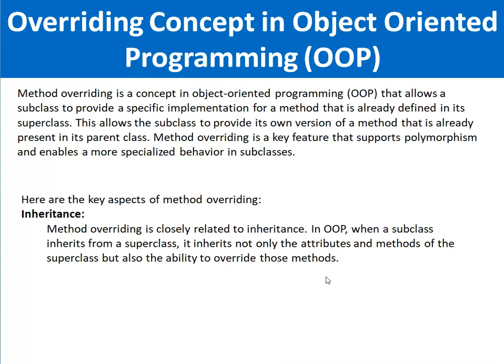Overriding basically allows a subclass — meaning the child class — to provide a specific implementation for a method that is already defined in its superclass. Overriding basically belongs to the concept of inheritance. Inheritance means that a child class or subclass can be inherited from the base class or superclass. When we inherit a subclass from the base class, all the methods and properties of the base class can be accessible by the child class.